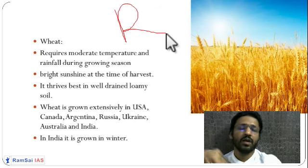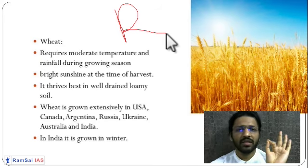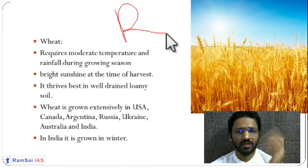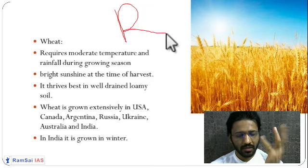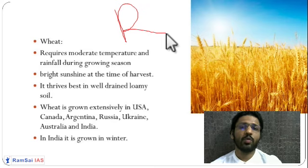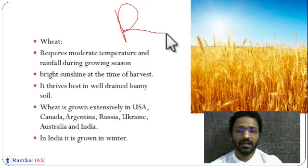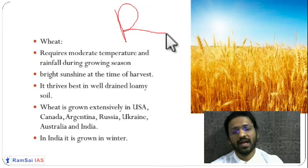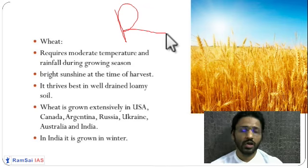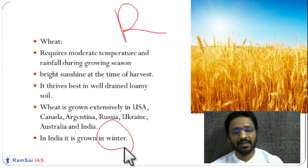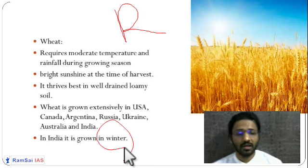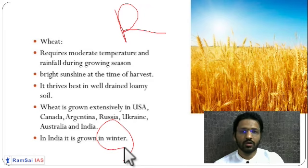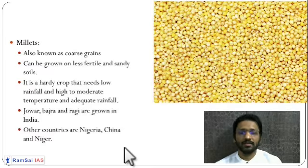Wheat is a rabi crop — it grows in India in the winter season, but in the temperate region it is grown throughout the year as commercial farming. Ukraine and Russia are called the granary of wheat; Europe is also part of this granary. Wheat requires very low rainfall and less temperature during the growing season. In India, western disturbances — a type of rainfall — are very useful for the growth of wheat.